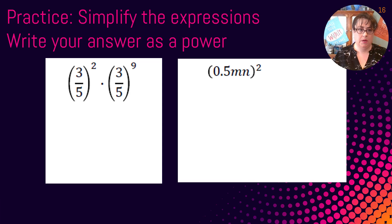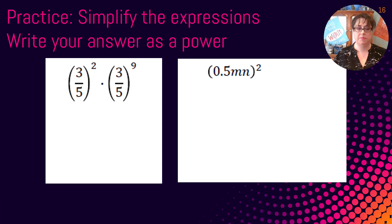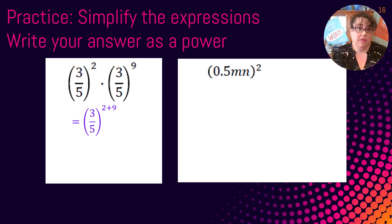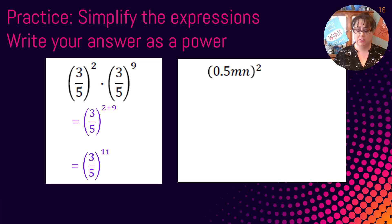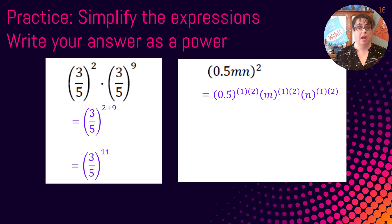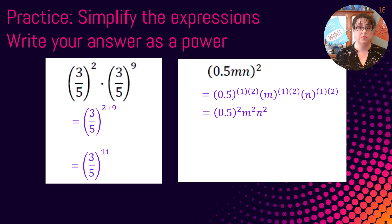What happens when you have funny questions with a fraction or a decimal? The rules are still the same. Our base on this one is just 3 fifths — it's 3 fifths squared times 3 fifths to the 9th. It's not asking us to evaluate, just write it as a power. So we add 2 and 9: our base is 3 fifths, and 2 plus 9 is 11, so we have 3 fifths to the 11th power. On the next one, we have three things inside our parentheses: 0.5, m, and n, all being squared. So 0.5 is to the first, m is to the first, n is to the first — and they're all multiplied by that power of 2 — giving 0.5 squared, m squared, and n squared.